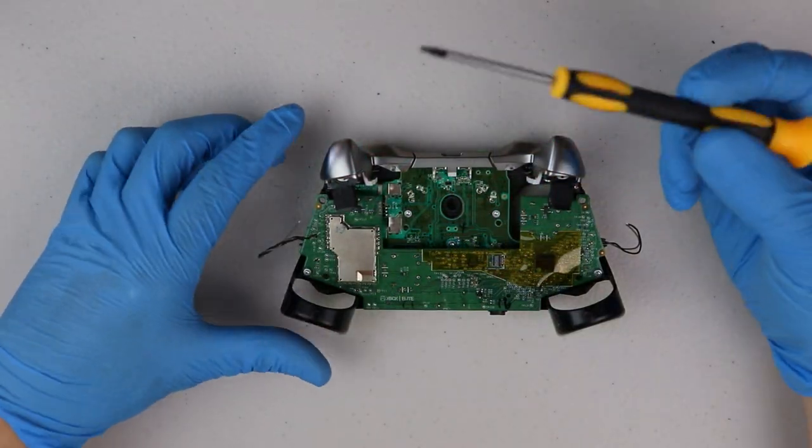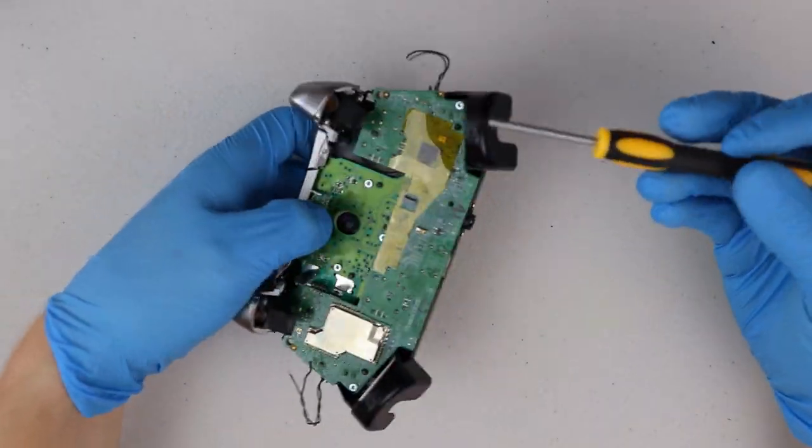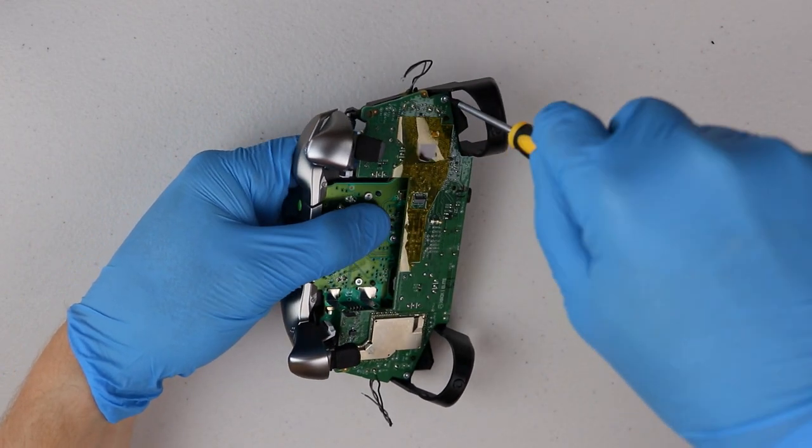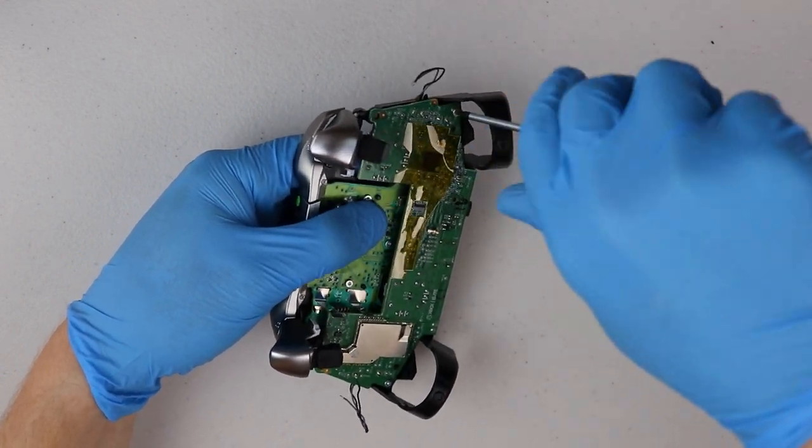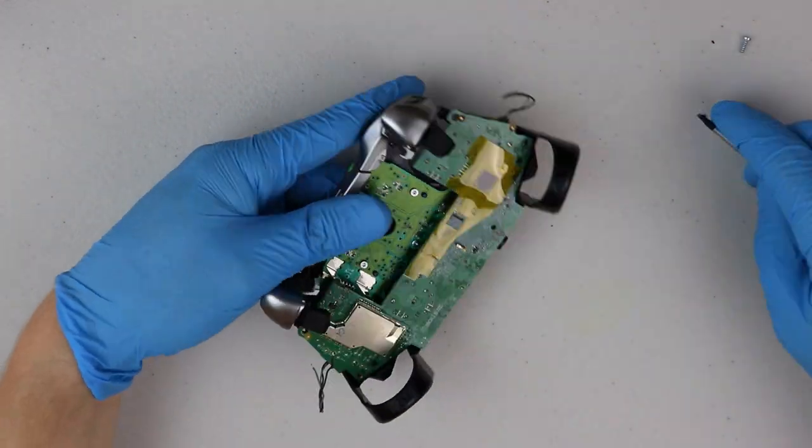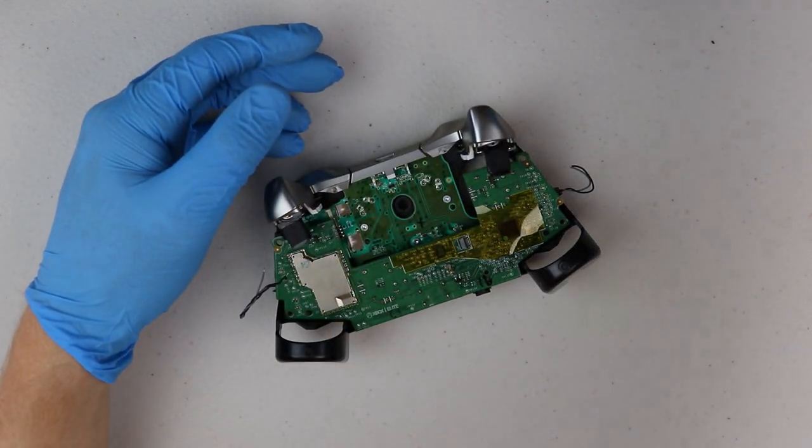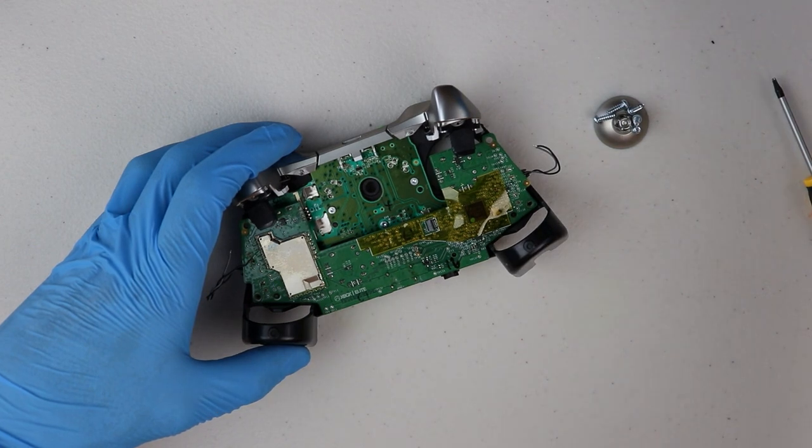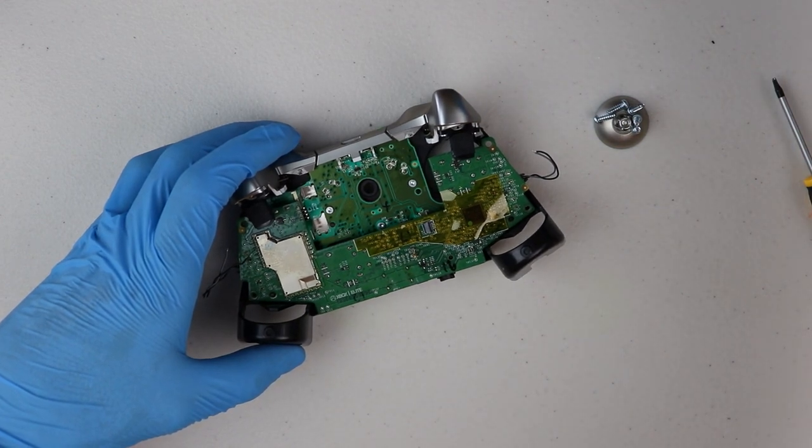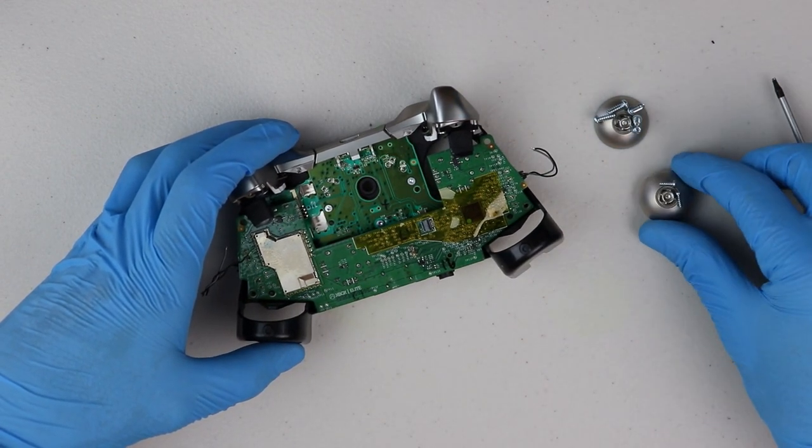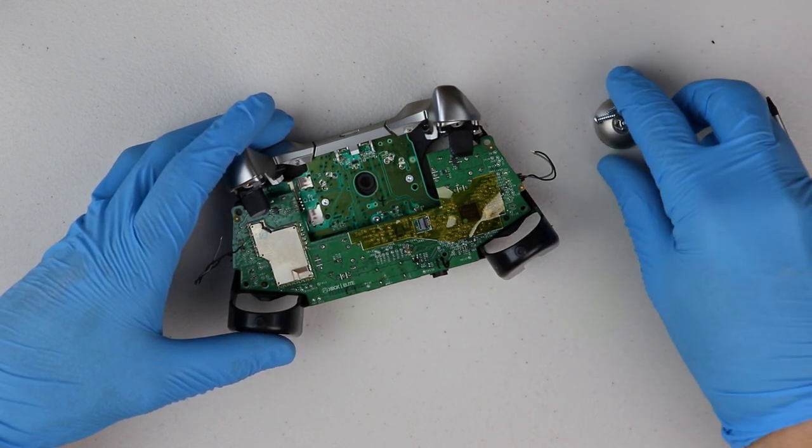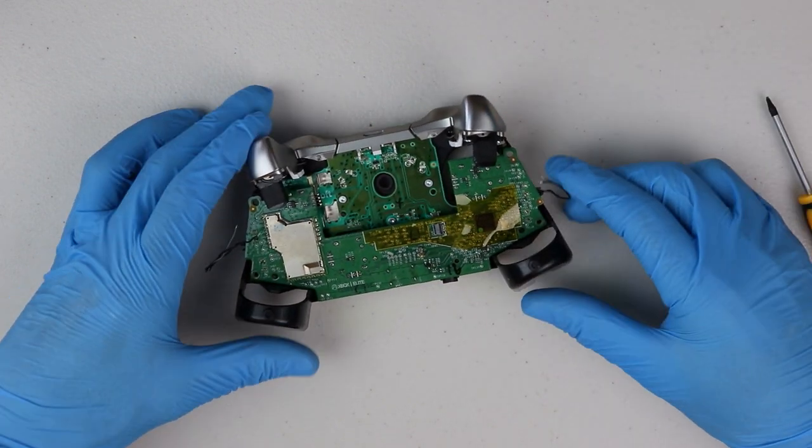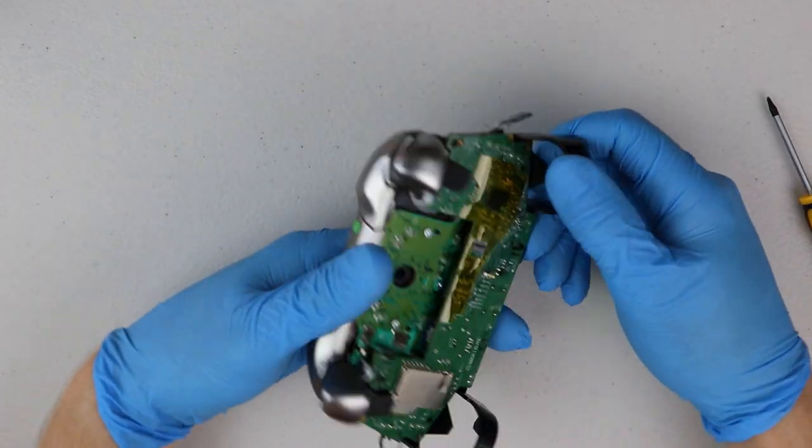Remove the rumble packs. Let's grab the T6 Torx screwdriver and remove the two screws on the motherboard on each side of it. A little tip, you can place the screws on the thumb grips, they are magnetic. Now we can remove the motherboard from the front plate.